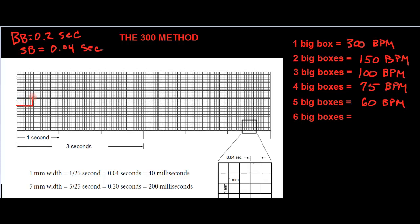And last but not least, what if they were six boxes apart? One, two, three, four, five, six — consistently six boxes apart. That would be half of three boxes apart, or half of 100 beats per minute, giving us 50 beats per minute.